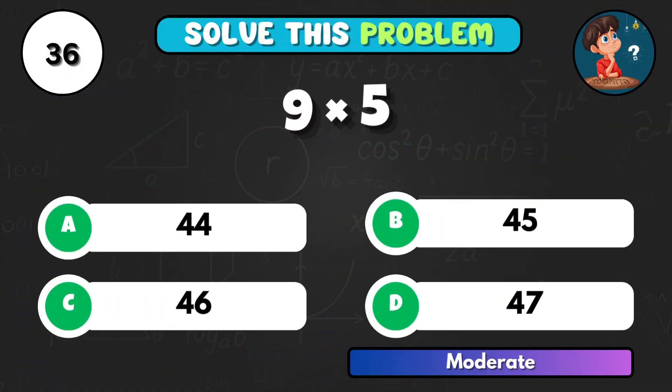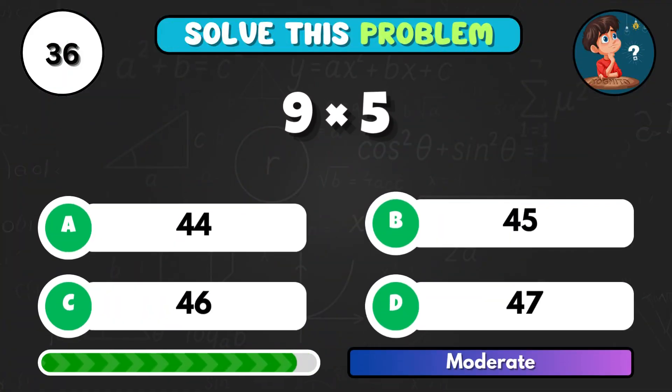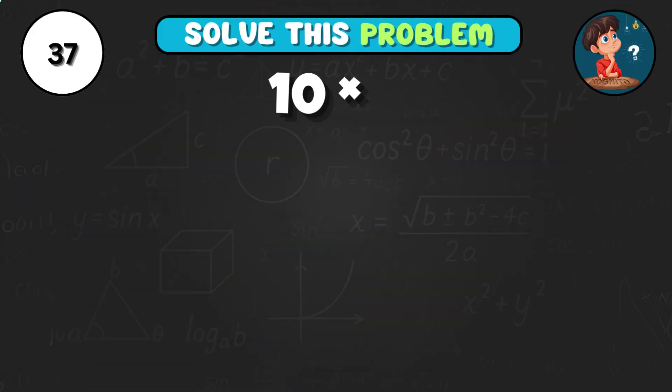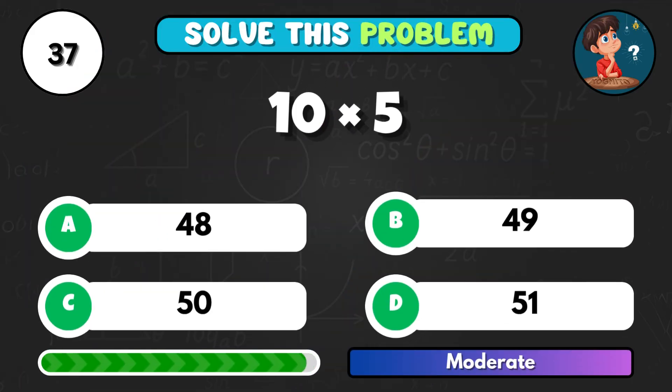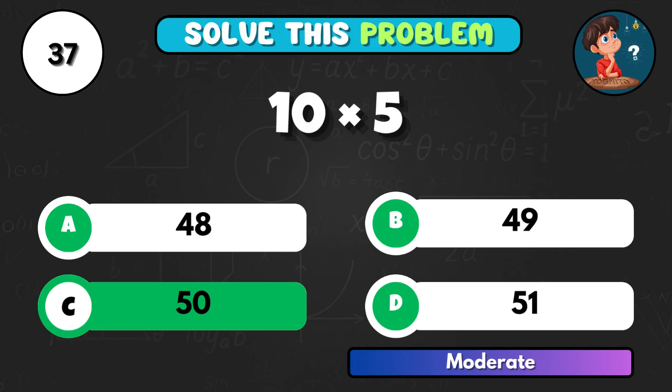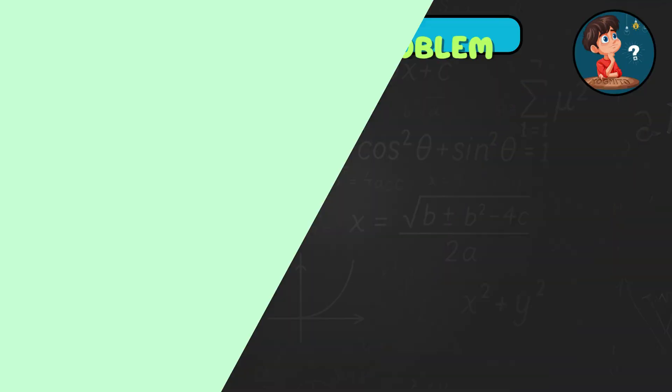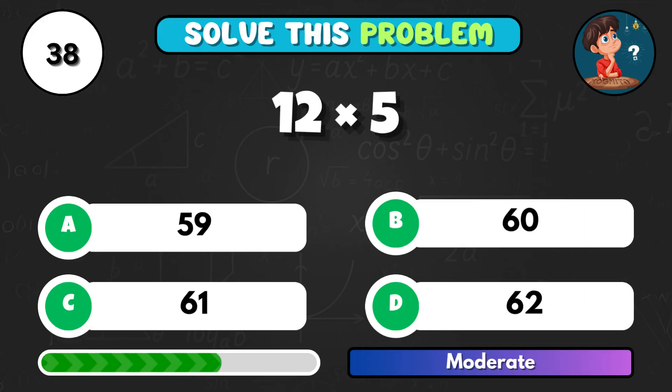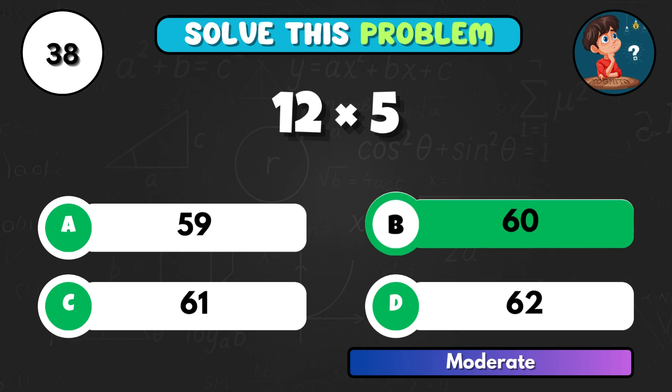9 times 5. Correct option B, 45. What about 10 times 5? Answer is C, 50. 12 times 5. Correct choice B, 60.